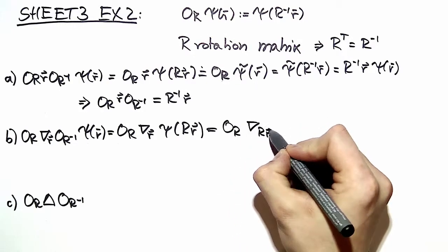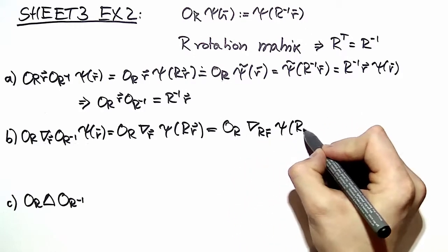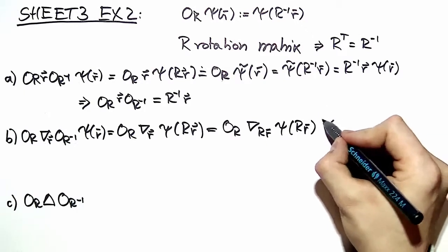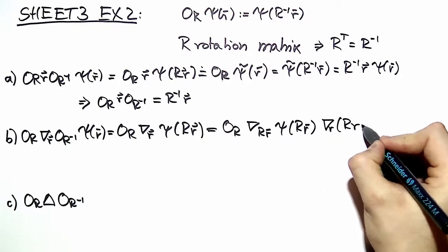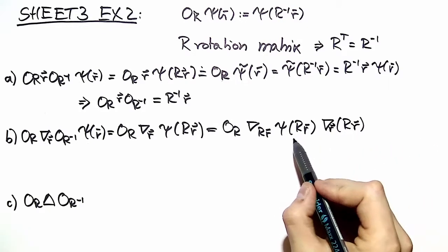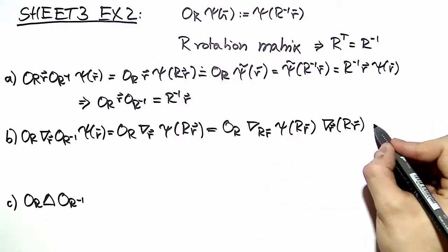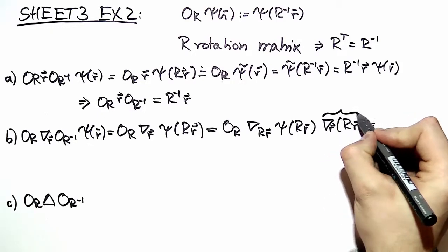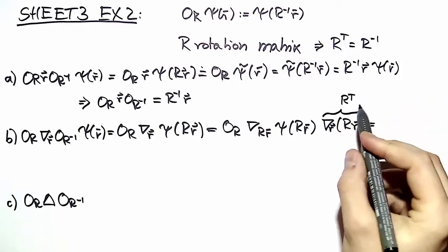To do that we have to use the chain rule and end up with the derivative of our argument according to our old variable right here. So this is nothing else than R transpose.